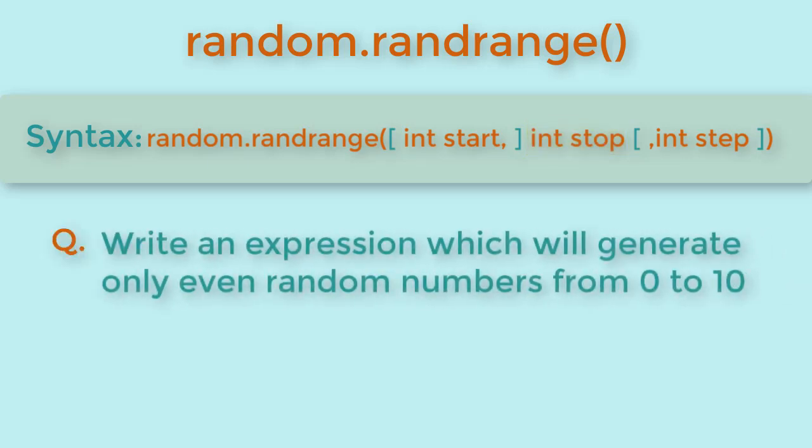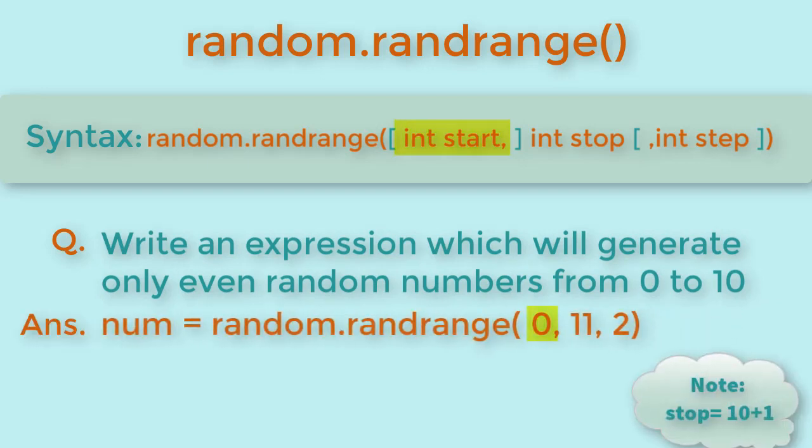So if a question is asked to write an expression which will generate only even random numbers from 0 to 10, you will give start of 0, end as 11, and step as 2 in the expression.